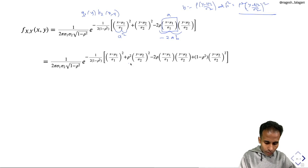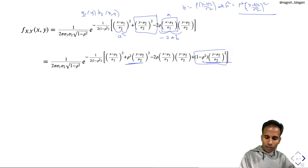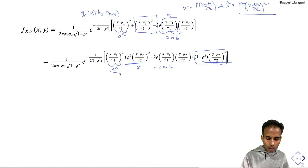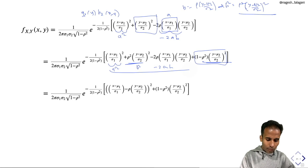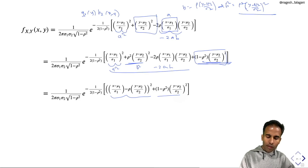After completing the square, the joint pdf becomes: 1/(2π σ1 σ2 √(1−ρ²)) · exp{−1/(2(1−ρ²)) · [(x−μ1/σ1 − ρ(y−μ2)/σ2)² + (1−ρ²)·((y−μ2)/σ2)²]}. Multiplying −1/(2(1−ρ²)) inside, the (1−ρ²) terms cancel, giving −1/2·((y−μ2)/σ2)². Using the exponential property, this separates into a product of two exponential terms.